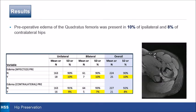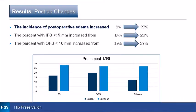Preoperative edema in the quadratus femoris muscle was present in 10% ipsilaterally and 8% contralaterally. Postoperatively, the incidence of quadratus femoris edema increased from 8% to 27%. The percent of patients with ischial femoral space less than 15 millimeters increased from 14% to 28%, and those with narrowed quadratus femoris space increased from 19% to 27%. Basically, everything doubled — except edema, which nearly tripled.